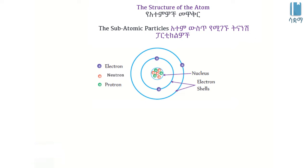Atomic nature: almost all the mass of the atom is concentrated in the nucleus. The nucleus is the central part. The atomic nucleus contains the proton and the neutron. Neutron and proton are much heavier than the electron. At the same time, the nucleus is the heavy part of the atom.